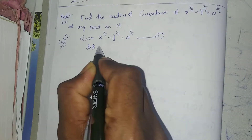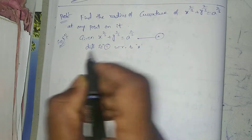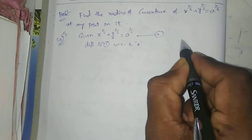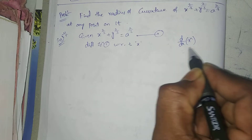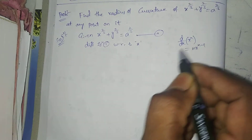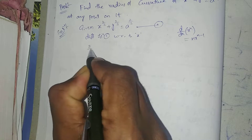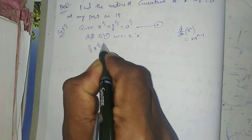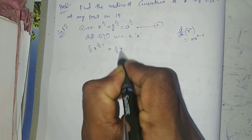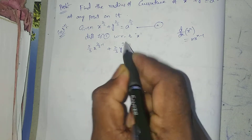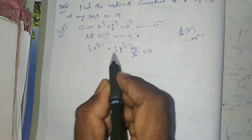Differentiating equation 1 with respect to x. We are using the formula d/dx of x^n = n·x^(n-1). So 2/3·x^(2/3 - 1) + 2/3·y^(2/3 - 1) · dy/dx = 0, since y is the dependent variable.